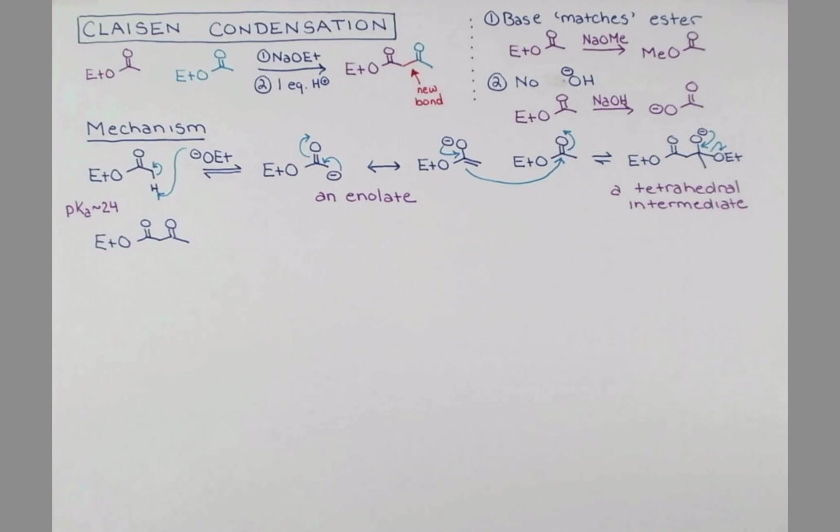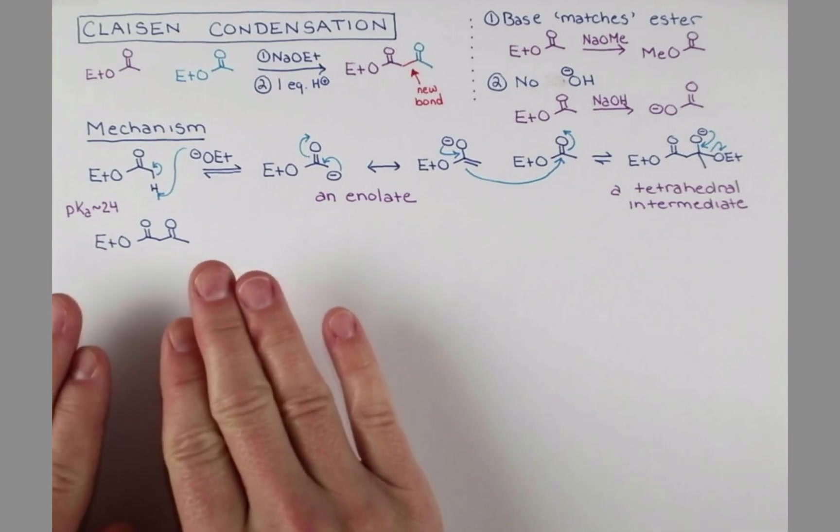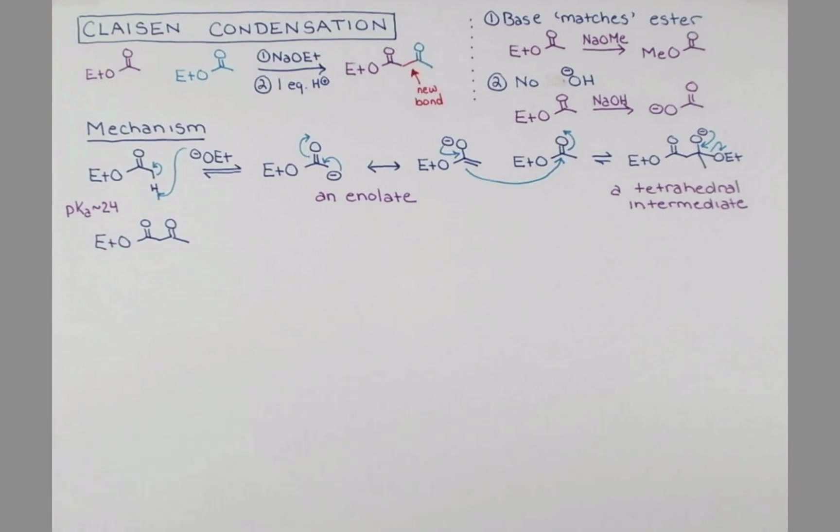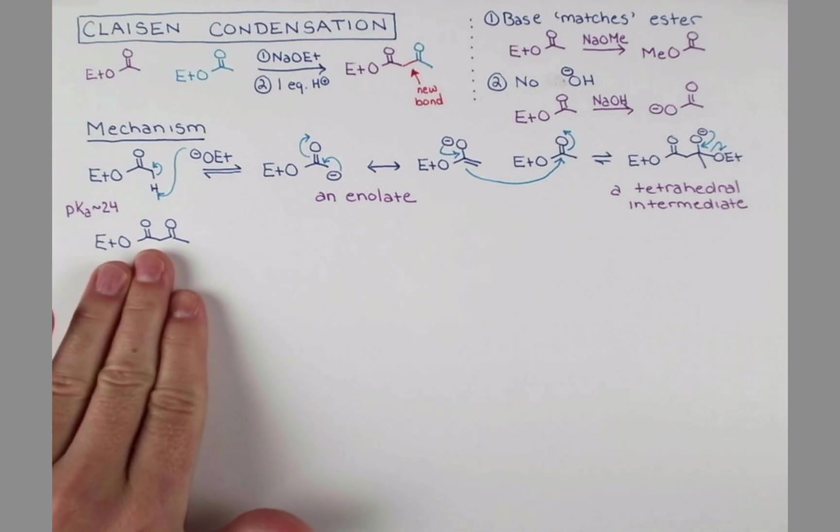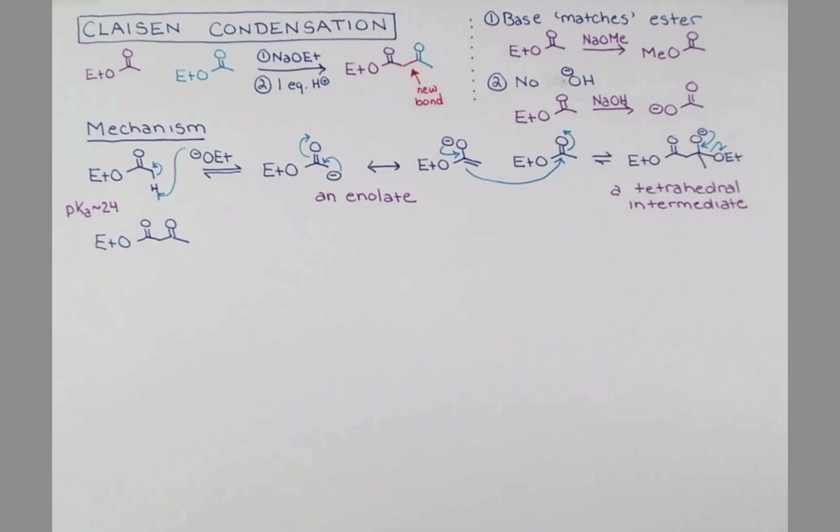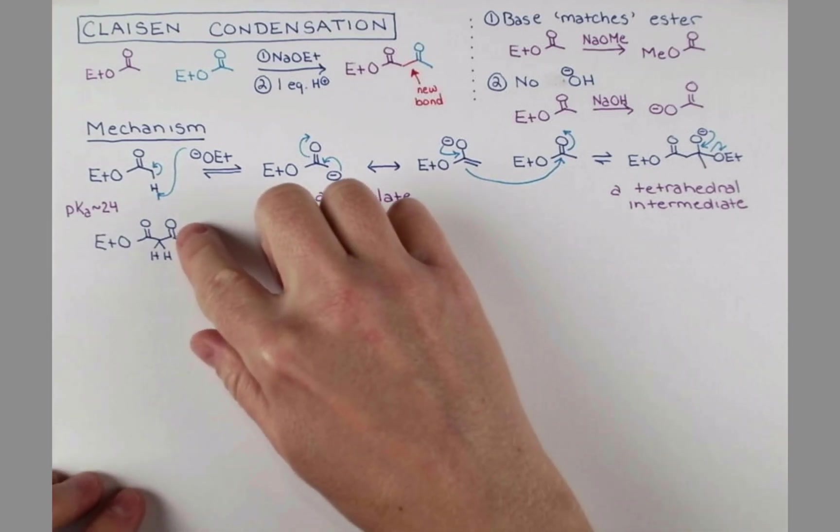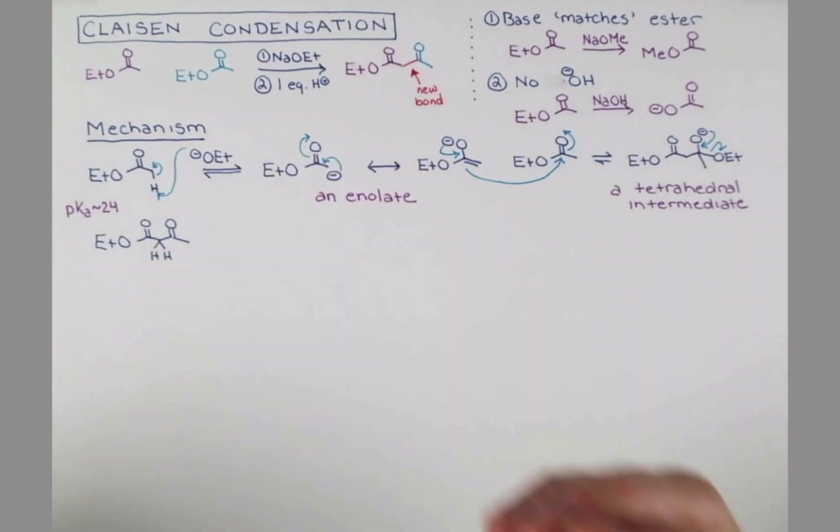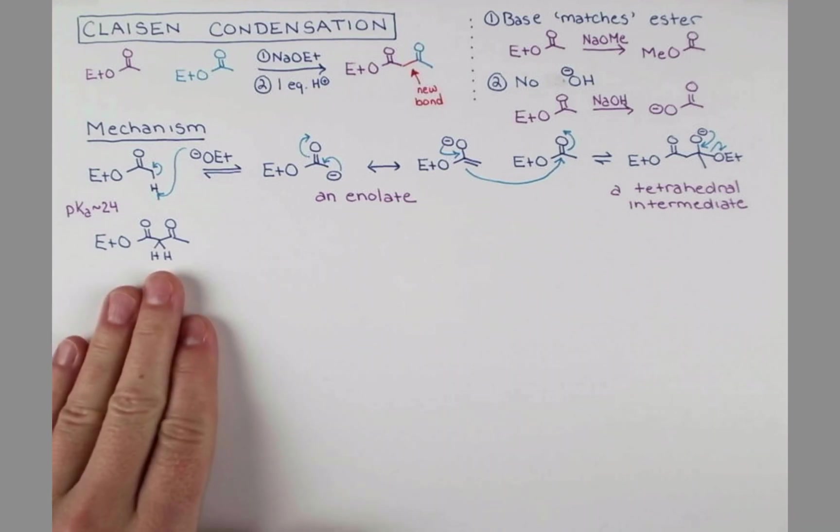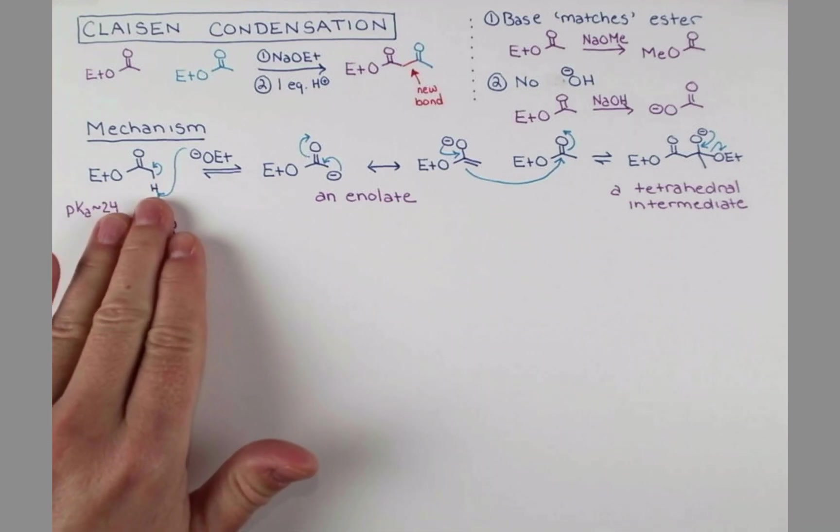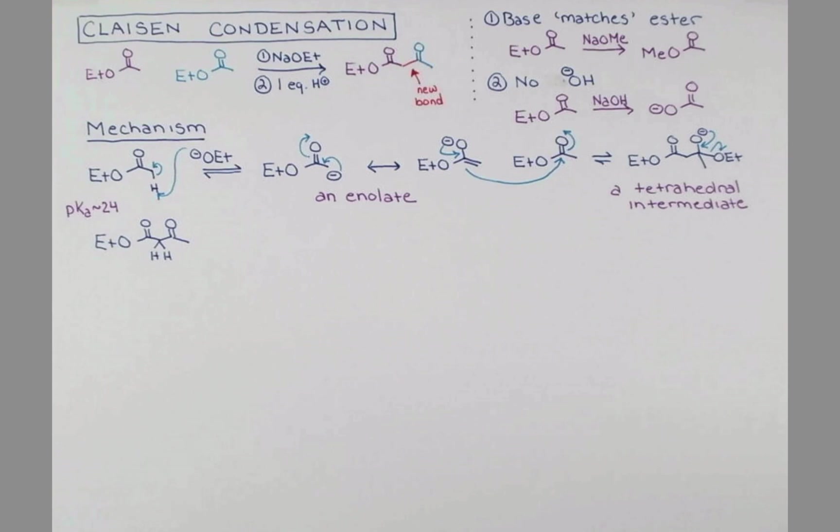Now you may think we're done, but this is not quite the end of the story with this mechanism. We have two protons right here on the carbon between the carbonyls. Since these hydrogen atoms are surrounded by these carbonyls, these electron-withdrawing groups, these are more acidic than this proton was in the starting material. In fact, they have a pKa of about 11.